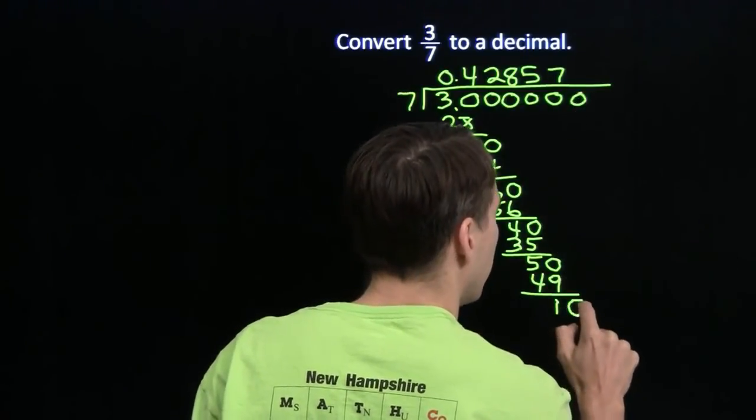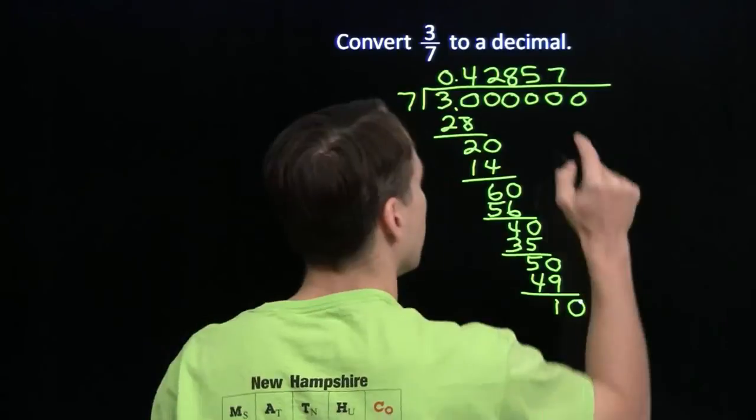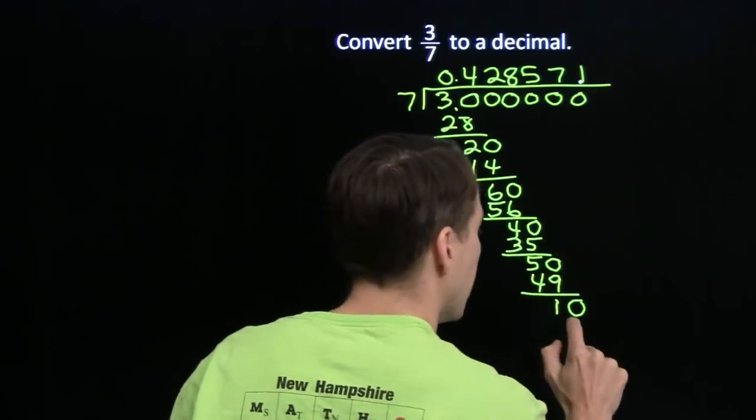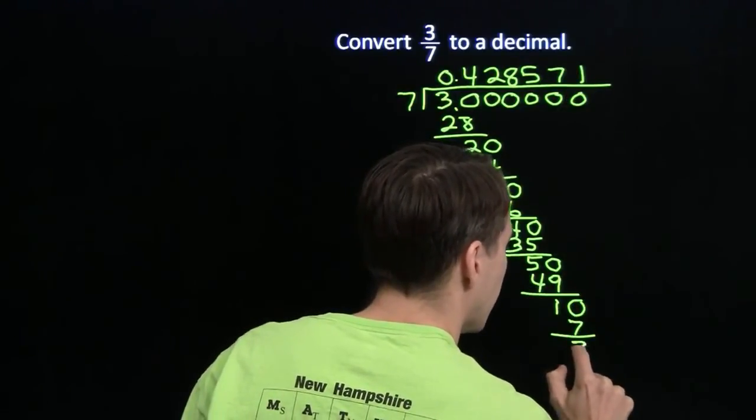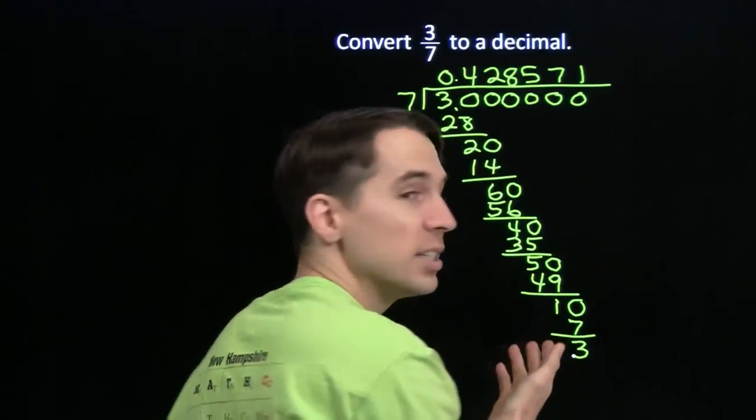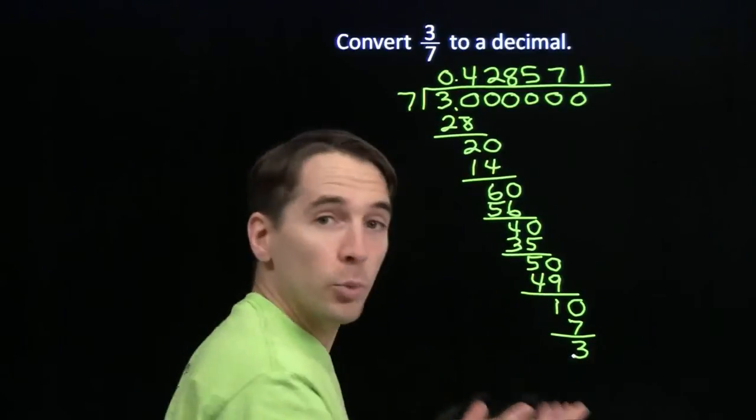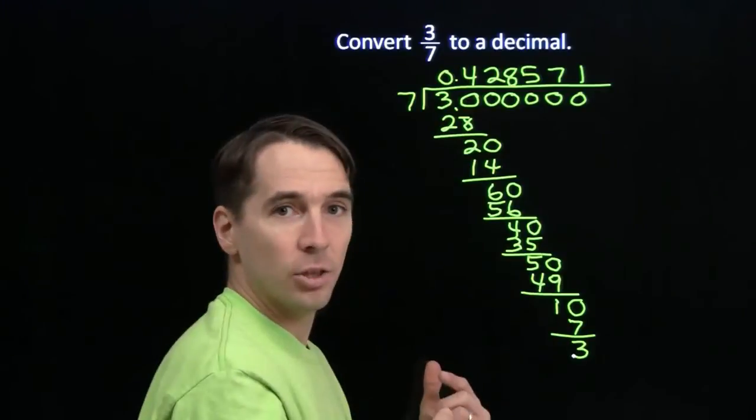Bring down the 0, 7 into 10, that just goes once. 1 times 7 is 7, and that gives us 3 left over. So 7 into 3, 7 into 3! That's where we started. We started with 7 into 3, so we're repeating a division here.